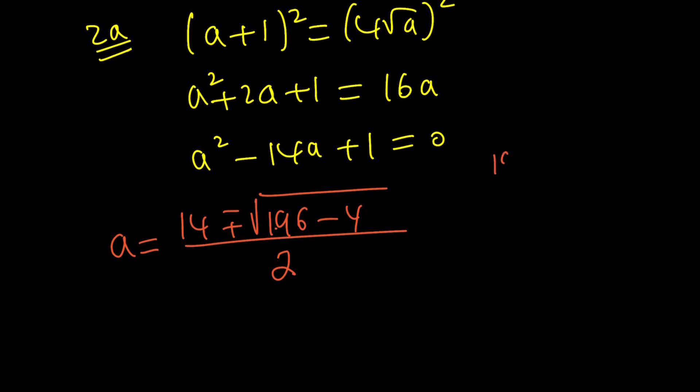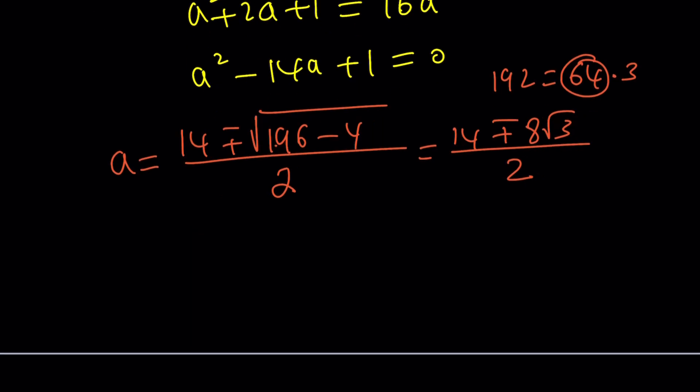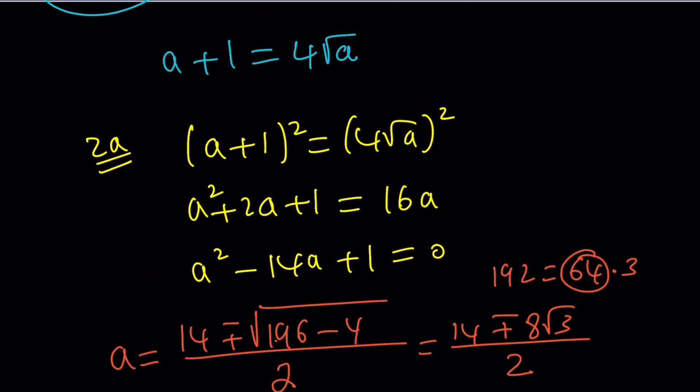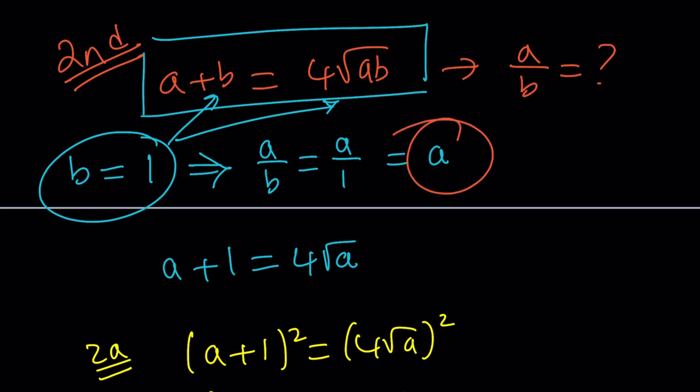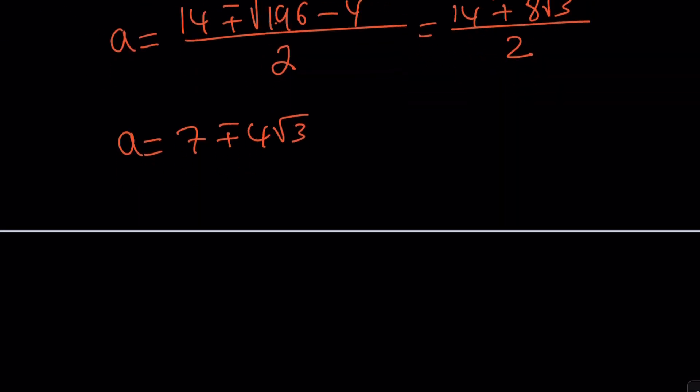196 minus 4 is 192. And 192 can be written as 64 times 3. 64 is the largest perfect square that goes into 192. So this can be written as 14 plus minus the square root of 64 times 3, which is 8 root 3. Divide by 2. And if you divide everything by 2, you get A equals 7 plus minus 4 root 3. Something that I like about this method is it gives you the answer directly, because A is what we were looking for. Remember, we replaced B with 1, and we're looking for A. Great. So those are the answers, same as the first method.